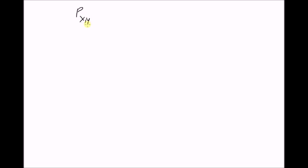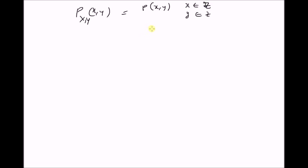Hello, welcome. In this short video, we will look at the derivation of the probability mass function of a sum of two random variables. That is, given that the joint PMF of two random variables X and Y is given by p(x, y) for all integer values of x and y, where Z is the set of integers, and zero for all non-integer values.